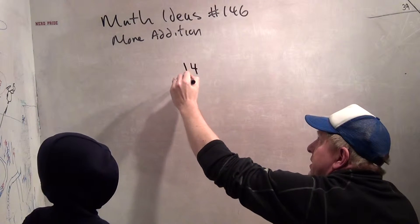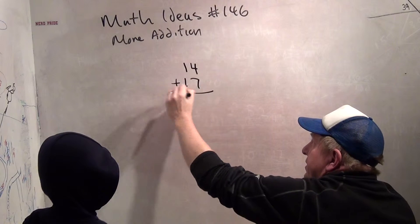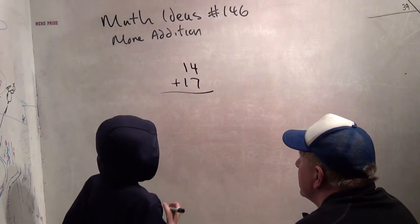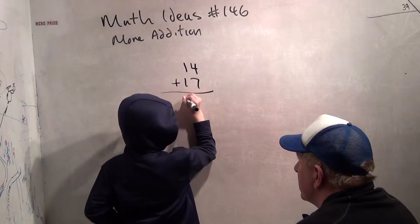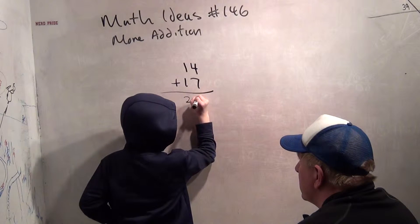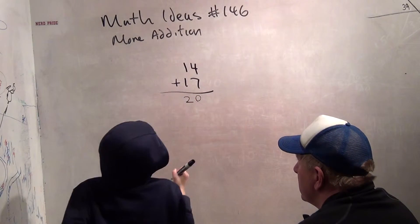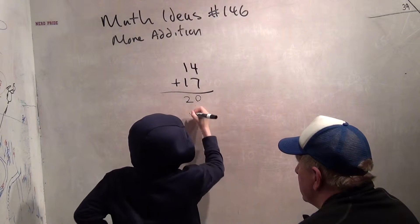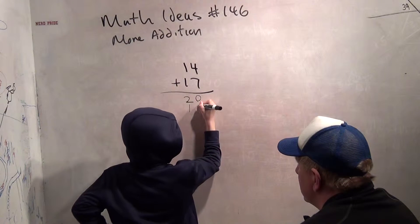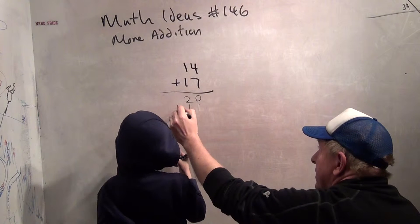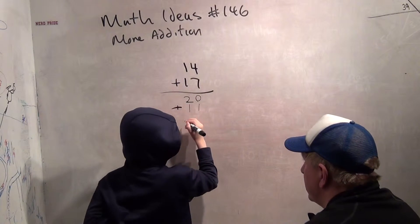How about 14 plus 17? How do you do that? That's 10 plus 10 equals 20. And 4 plus 7 is 11. So what is that? 20 plus 11 is 31.